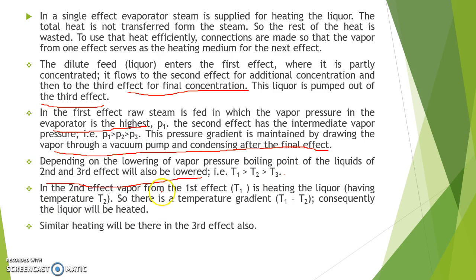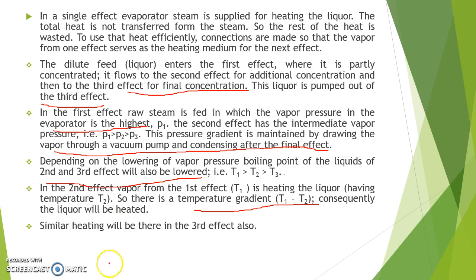That is, the temperature in the first effect is higher than in the second effect, which is higher than in the third effect. In the second effect evaporator, vapor from the first effect at temperature T1 is heating the liquor having temperature T2, so there is a temperature gradient of T1 minus T2. Consequently the liquor will be heated, and similar heating occurs in the third effect as well.